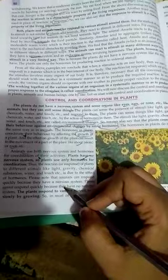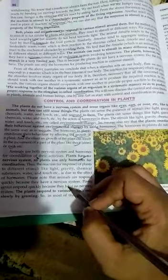Please note that animals respond quickly because they have a nervous system. Plants cannot respond quickly. They respond to various stimuli slowly by growth.